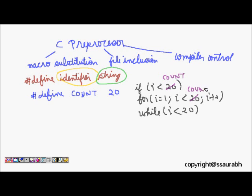Whenever the compiler is compiling and sees the identifier COUNT, it will automatically replace it with 20. The advantage is that we now have much simpler and cleaner code.